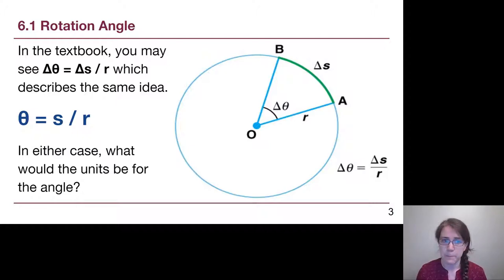So if we think about theta, it is based on an equation that is the units of meters divided by the units of meters. Those would cancel out, leaving us with nothing at all. So what are our units for angle?